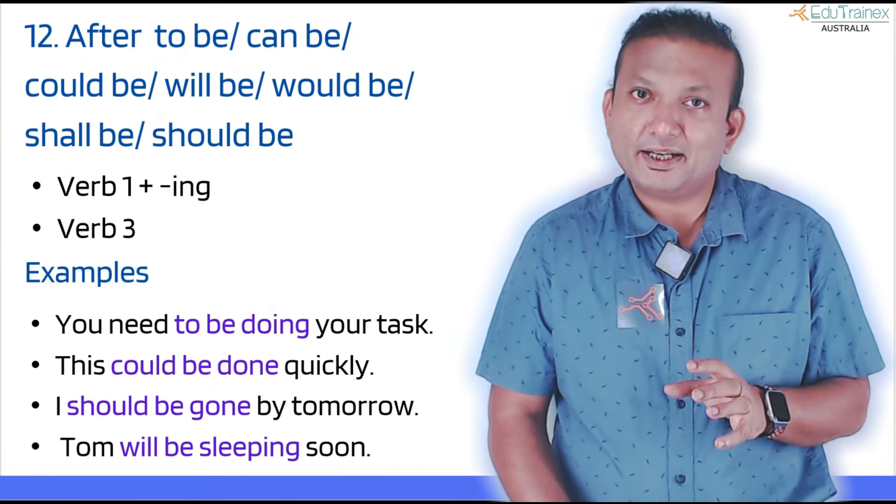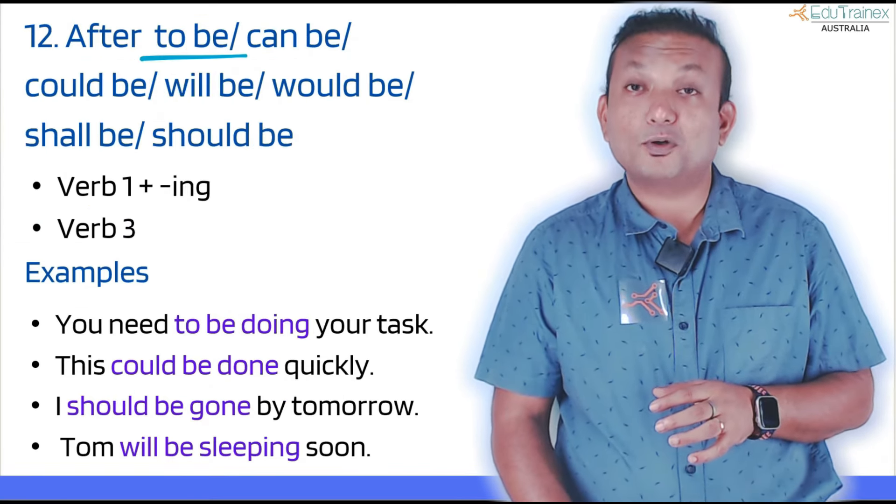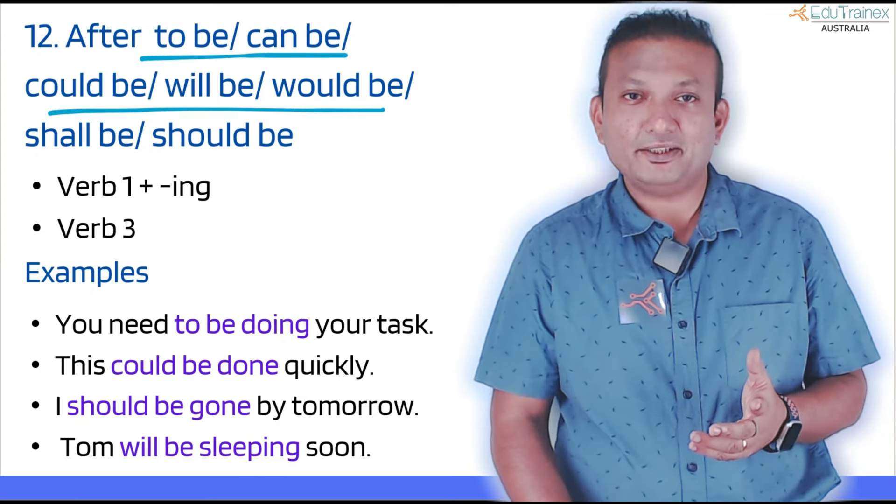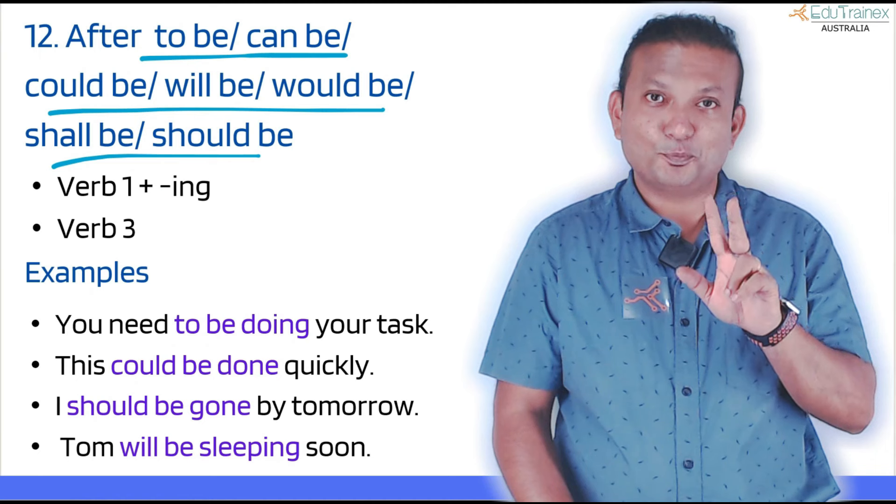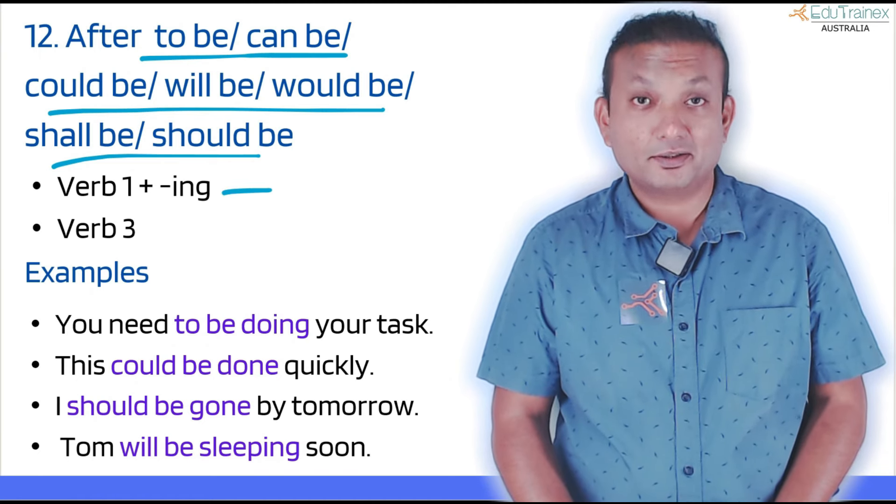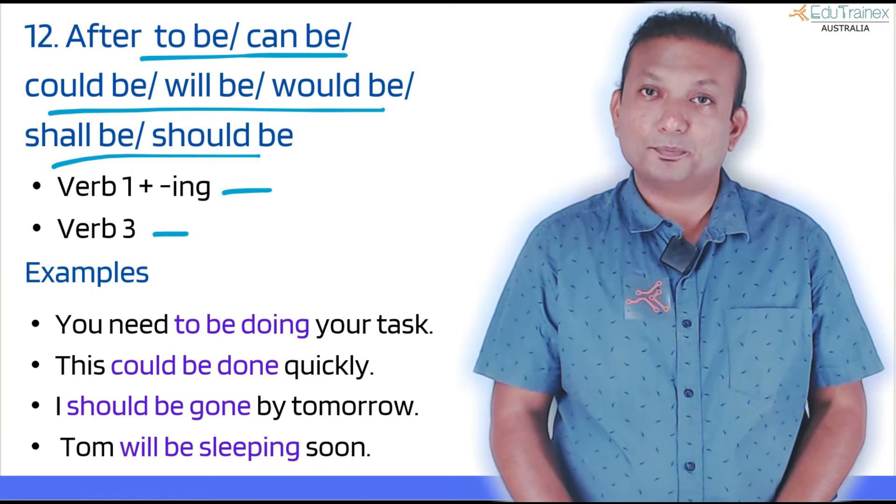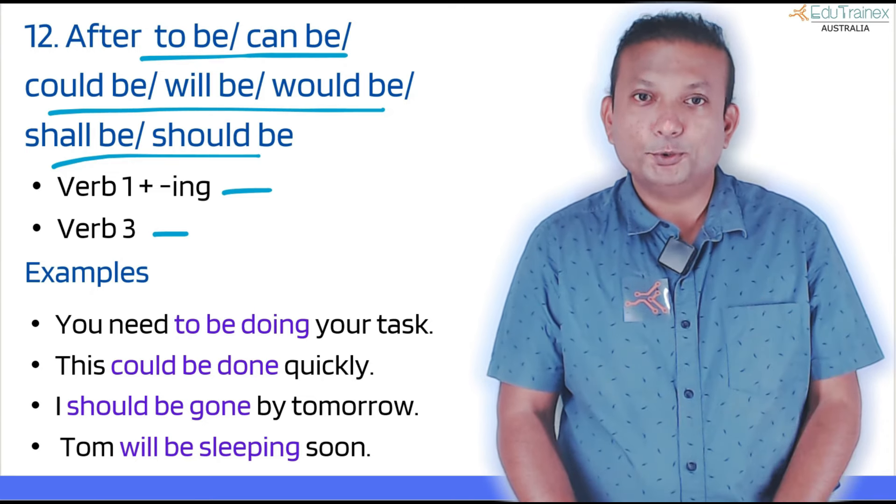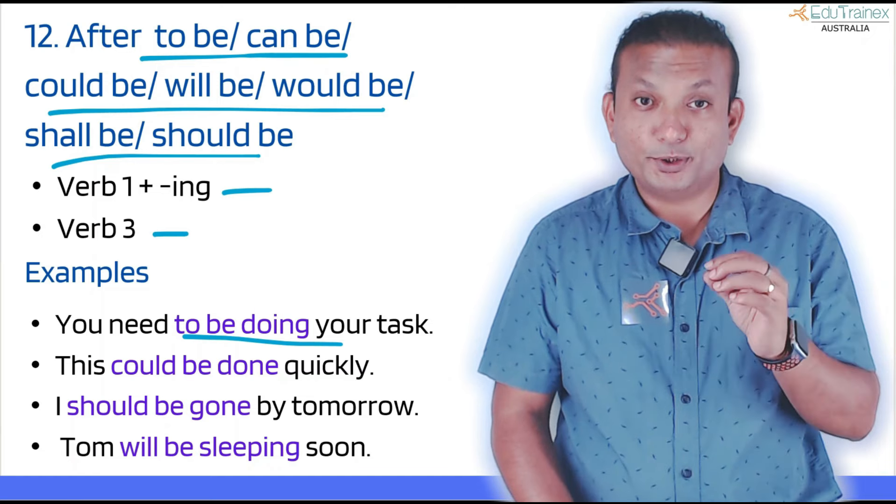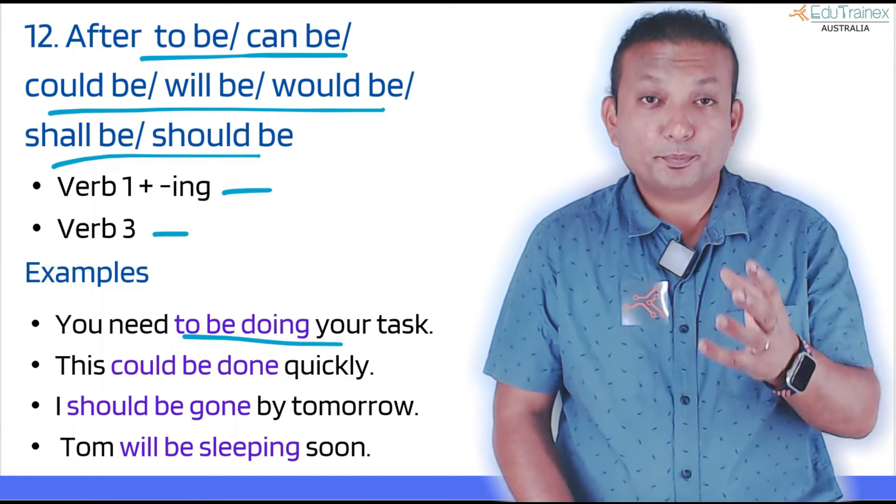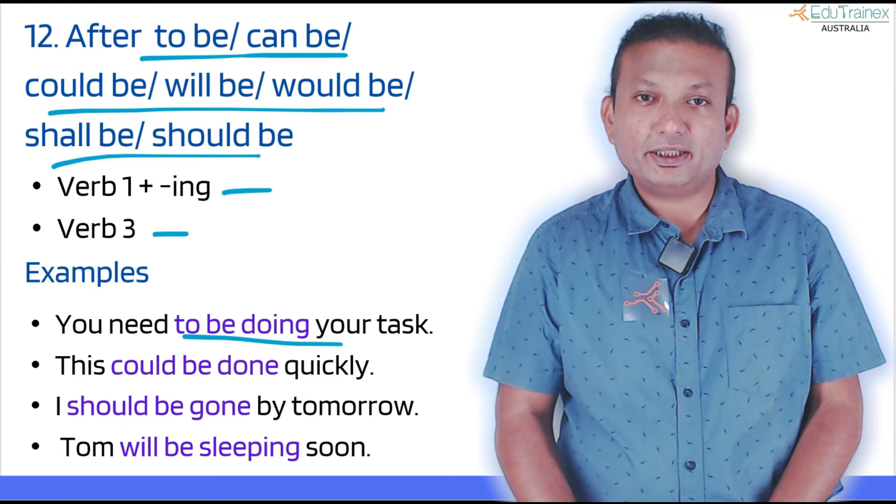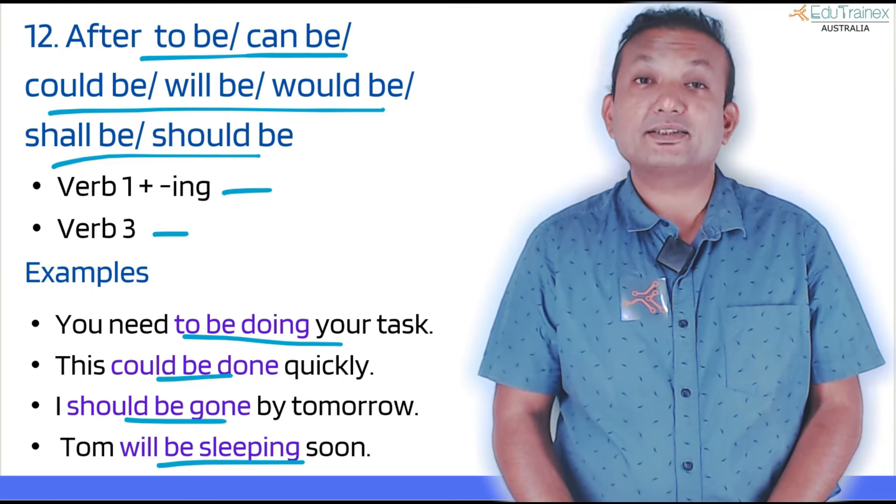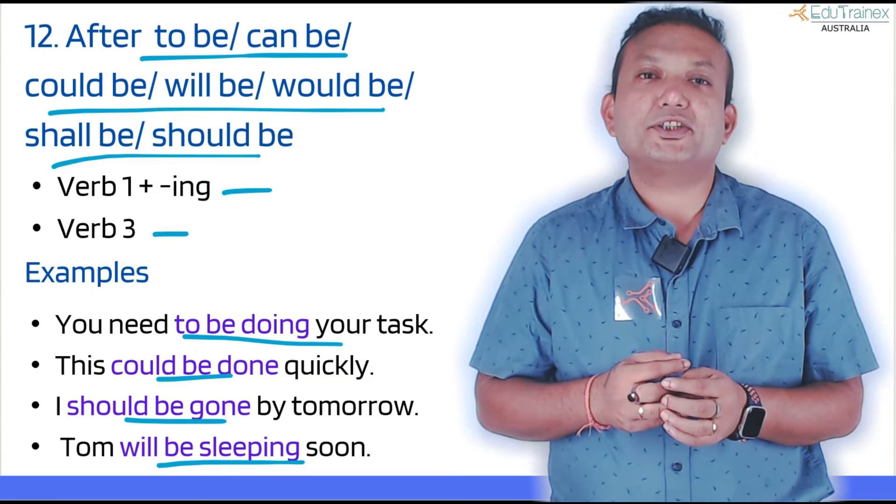The next one is a slight variation of the previous one: what comes after to be, can be, could be, will be, would be, shall be, or should be. Two possibilities here: verb one plus ing continuous tense, or verb three. See the examples and then you will understand when comes what. 'You need to be doing your task,' 'to be doing,' 'can be doing,' 'could be doing,' 'will be doing,' 'would be doing.' 'This could be done quickly,' 'I should be gone by tomorrow,' 'Tom will be sleeping soon.' You see how 'be' changes the verb to either ing or verb three depending on how you want to use it.